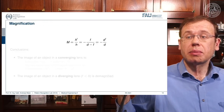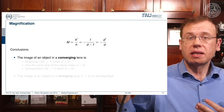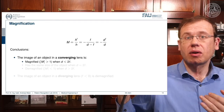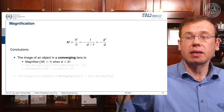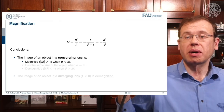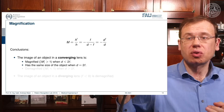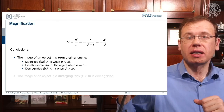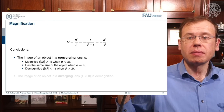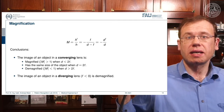The image of a converging lens is magnified (|M| > 1) exactly when D is smaller than 2F. It has the same size as the object when D equals 2F, and is demagnified (|M| < 1) when D is greater than 2F. The image in a diverging lens is always demagnified.